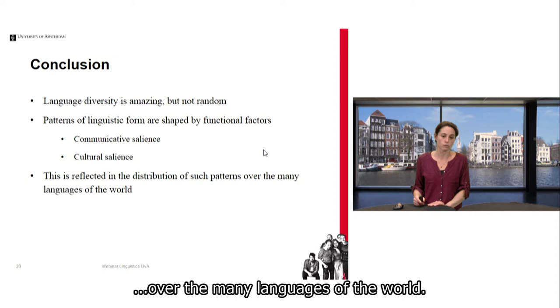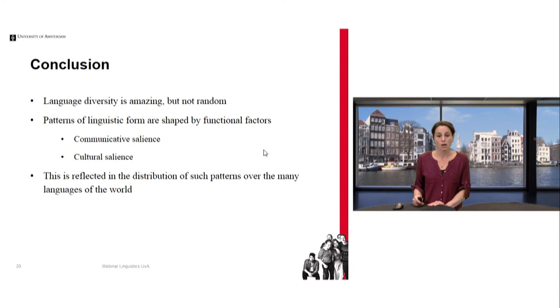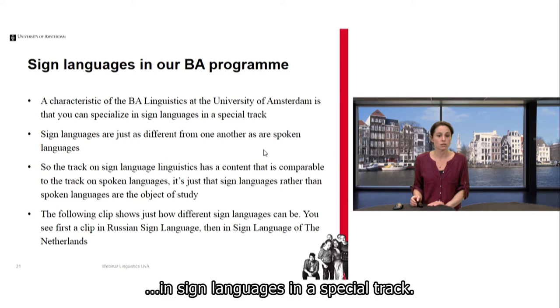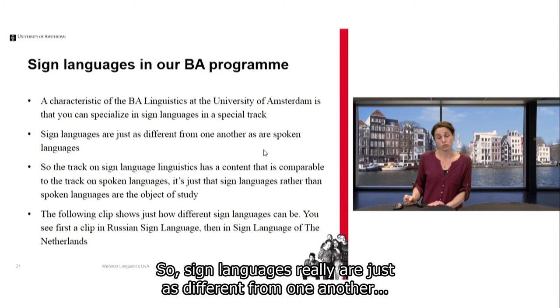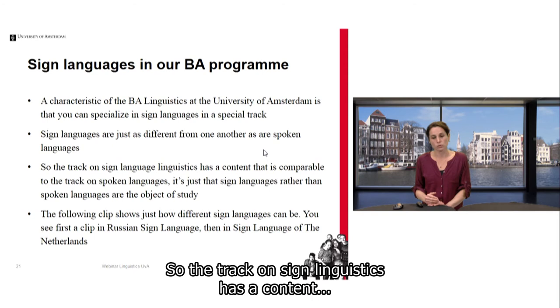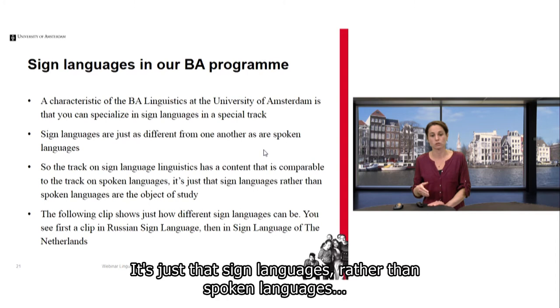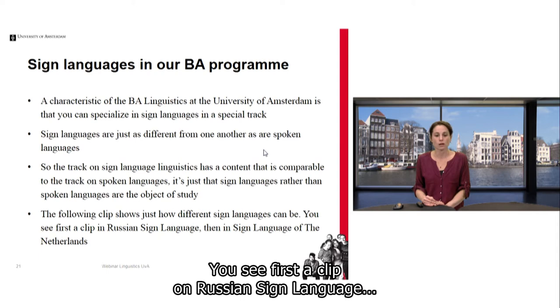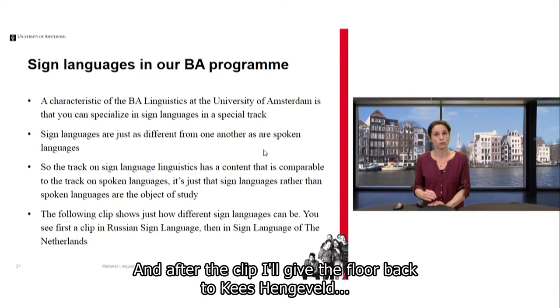So far I've talked mainly about spoken languages, but sign languages also have a prominent position in our BA programme. A special characteristic of our programme is that you can specialise in sign languages in a special track. Sign languages really are just as different from one another as spoken languages. The following clip shows you just how different sign languages can be — first a clip on Russian sign language and then Sign Language of the Netherlands. After the clip, Kees Hengenveld will give you more information about the content of the programme.